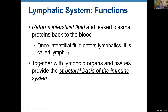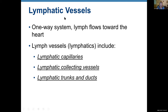Lymph is not exactly the same as plasma because plasma has a higher concentration of plasma proteins; especially large proteins should stay within blood vessels. So the first function is to return interstitial fluid back to the blood, and together with lymphoid organs and tissue, provide the structural basis of the immune system. The structural basis of the immune system is the lymphatic system; the immune system itself is a physiological system.